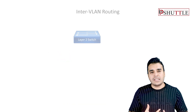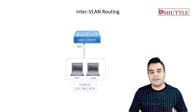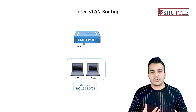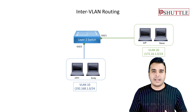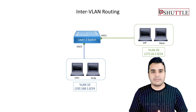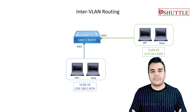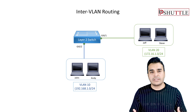The first thing we are going to discuss is why you need inter-VLAN routing. For example, you have two different VLANs — VLAN 10 and VLAN 20. In VLAN 10 you have John and Andy, and in VLAN 20 we have Jeff and Steve. They are in two different subnet IDs from where you cannot communicate.